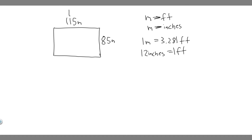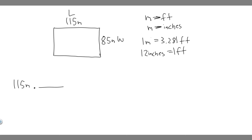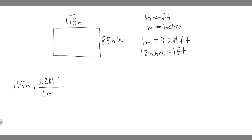So this is the length and this is the width. Let's start with the length first. We're going to convert the length into feet and then into inches. We know the length is 115 meters. So we write it out and multiply it by its conversion — since meters is on top, we put the meter conversion on the bottom. One meter equals 3.281 feet.